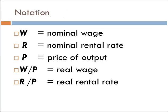Let's talk about some notation. W will be the nominal wage — the return to labor without any adjustment for price level. R will be the nominal rental rate of capital — how much we pay capital, also unadjusted for price level. P is the price of output, the aggregate price level. So W divided by P will be the real wage rate, and R divided by P will be the real rental rate. Whenever we divide nominal by price level, we get the real level.